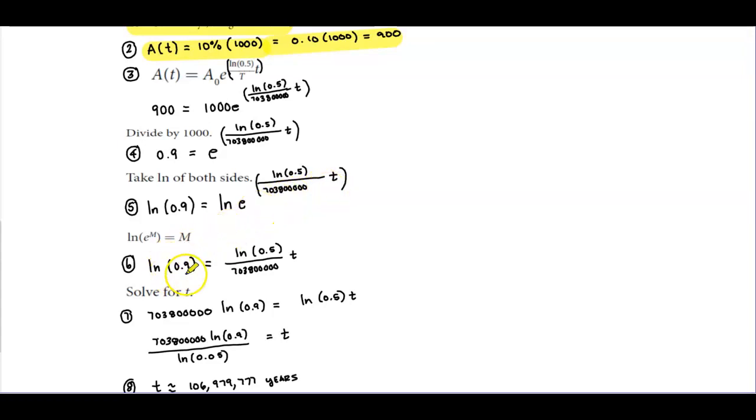So we get the natural log of 0.9. And recall here that this just becomes, since we have e and the base of e, this becomes natural log of 0.5 divided by 703,800,000 t.